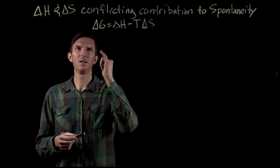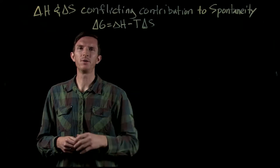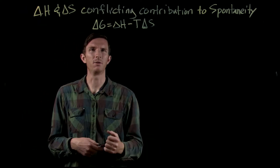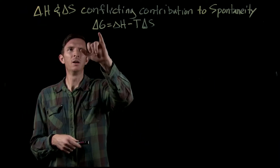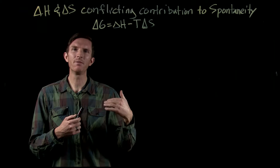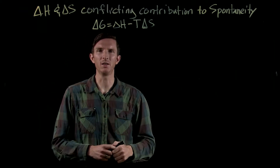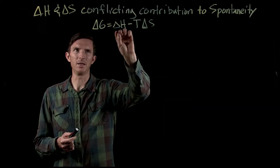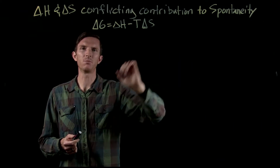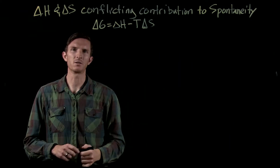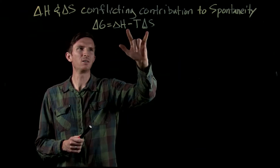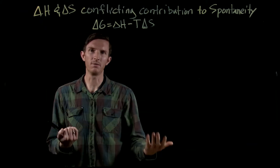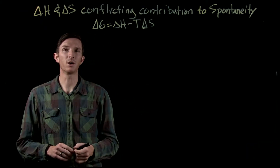So far we have seen that the Gibbs free energy change for a reaction tells us something about spontaneity. If we remember that our Gibbs free energy change is negative, that reaction or process is spontaneous. It's built up of two pieces: the enthalpy change for a reaction and the entropy change for a reaction. And we'll see that the signs of each of those contribute either positively or negatively to a spontaneous process.